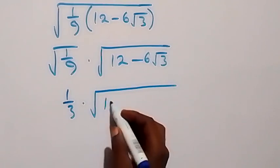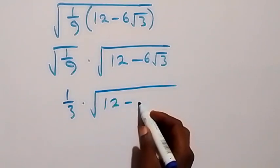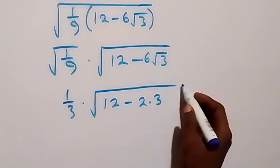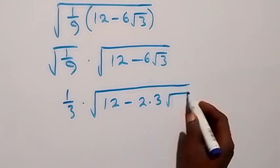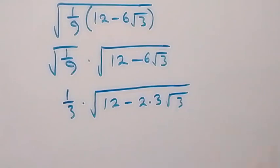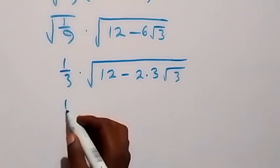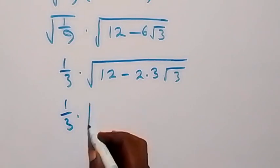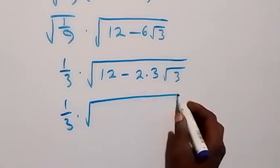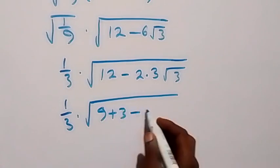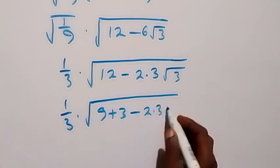We can write 12 minus 6 root 3 as — 6 here is 2 times 3, and root of 3 from here. Then also 12 can be written as 9 plus 3, and we have 1 over 3 times square root of 9 plus 3 minus 2 times 3 times root 3.